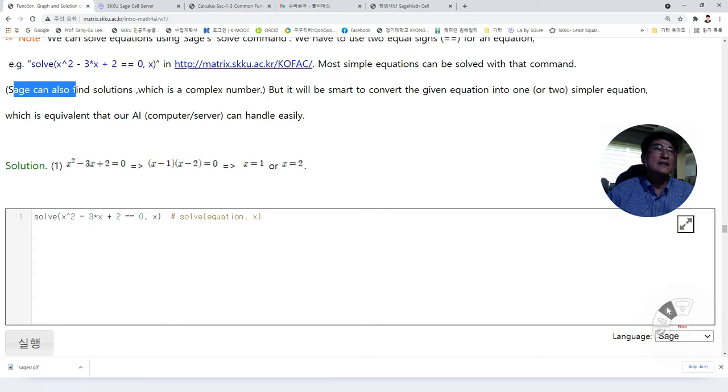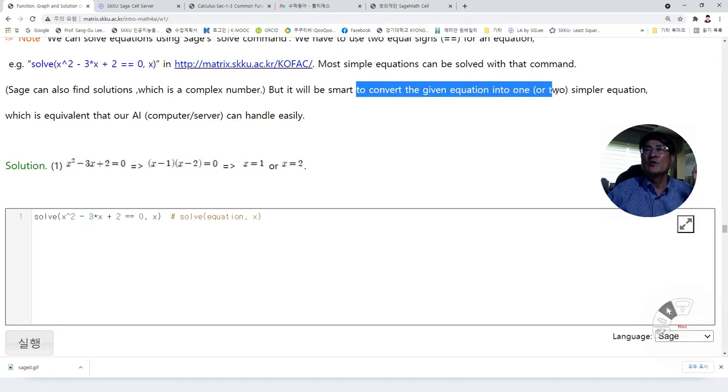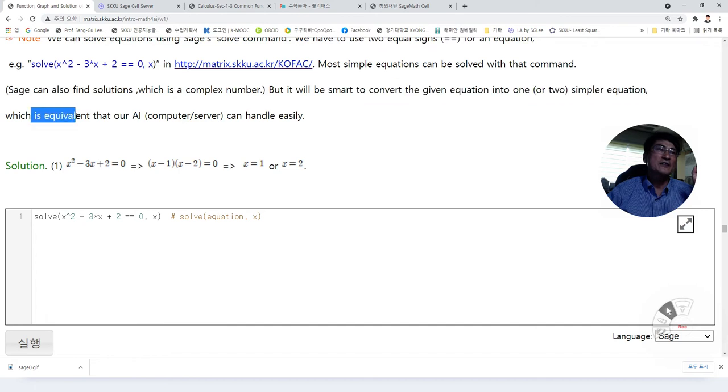But in order to do so, we need to have more knowledge on code. Or we can do the same thing if we are smart to convert the given equation into one or two simpler equations, which is equivalent to that, so our AI can handle easily and fast.